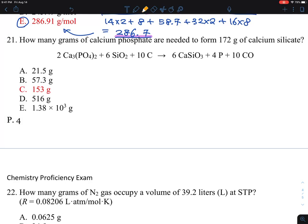This one is essentially asking you how many grams of calcium phosphate are needed to form so many grams of calcium silicate, which is shown up here. What you need to know is this is a balanced equation, so what this chemical reaction means is 2 moles of this will produce 6 moles of calcium silicate.